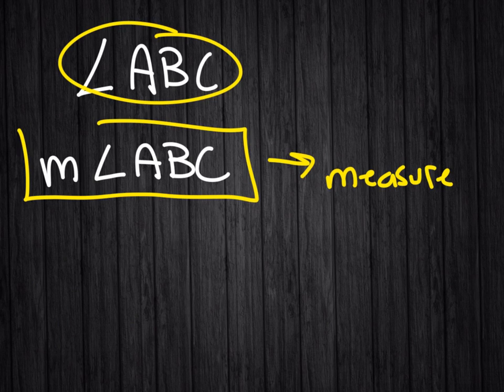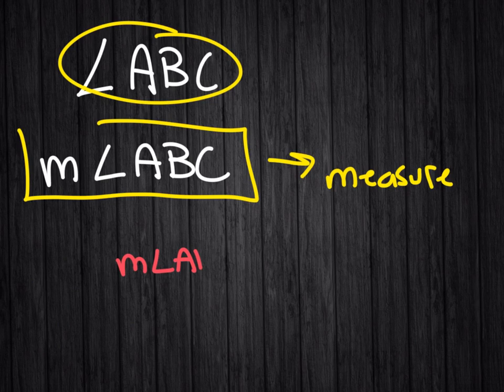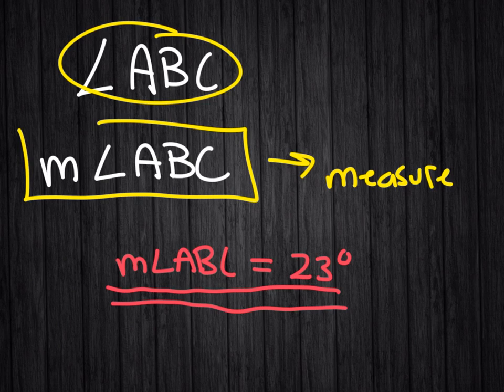So, for instance, if we have the measure of angle ABC, we often will refer to its angle size because it's talking about the measurement of that.